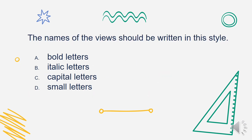Next question: the names of the views should be written in which style? Is it A. Bold Letters, B. Italic Letters, C. Capital Letters, or D. Small Letters? The answer is Letter C. Capital Letters.